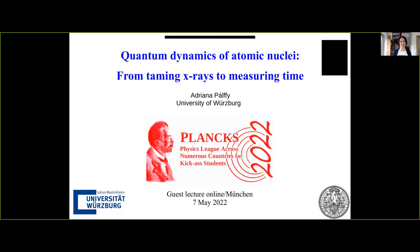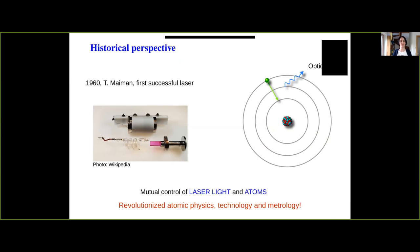My talk will be on Quantum Dynamics of Atomic Nuclei, from taming X-rays to measuring time. The easiest way to start is on a historical perspective. Quantum dynamics means that you are able to drive or influence the dynamics of quantum systems — systems which have discrete states. One of the first examples is that 62 years ago, Ted Maiman was successful in building the first ruby laser, and lasers are using atomic transitions, typically of valence electrons, to generate very intense light.